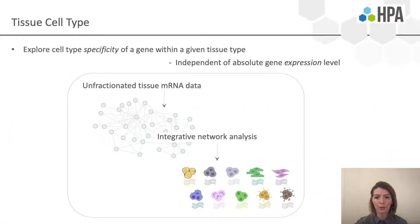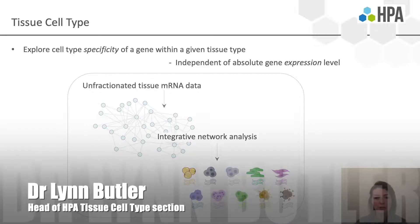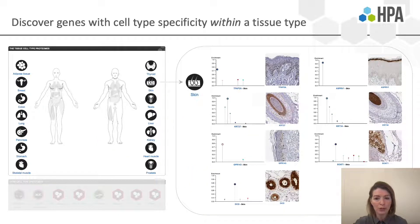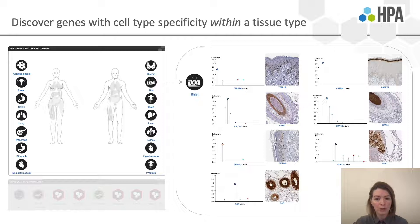The tissue cell type part of the Human Protein Atlas is a new section providing information on how specific a gene is predicted to be in a particular cell type within a given tissue, independent of the absolute expression of the gene. This information is generated from bulk RNA sequencing data using a method based on the selection of virtual marker transcripts as the basis for an integrated network analysis. If you are interested in which genes have cell type specificity within a given tissue, you can search using the tissue map. The panel on the right shows data for genes predicted to have cell type specificity in the skin — for example, in the keratinocytes, the different cells of the hair follicle, and the sebaceous and sweat glands. You can also view the associated protein staining.